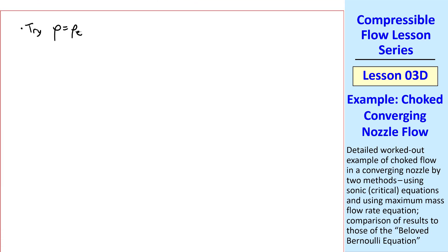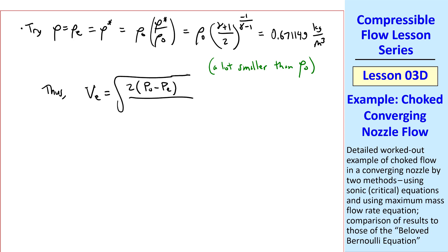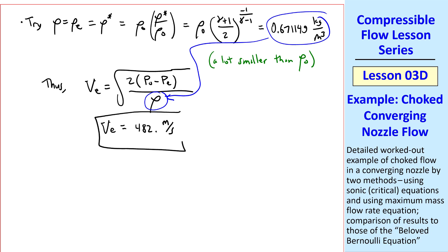Let's try rho equal rho E instead, which is equal to rho star. Well again, using ratios, we have rho equal rho naught, rho star over rho naught. And rho star over rho naught is gamma plus 1 over 2 to the negative 1 over gamma minus 1. Well, we already calculated rho naught above, and we plug in our gamma of 1.40. And the exit density turns out to be 0.671149 kilogram per meter cubed, which by the way is a lot smaller than rho naught, which was close to 1. So when we plug in this density into our equation from the beloved Bernoulli equation, without showing all the numbers, I get 482 meters per second, which again is not correct, since the correct exit speed is 417 meters per second.